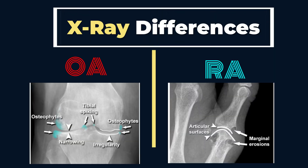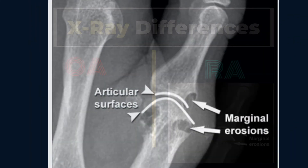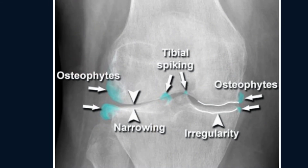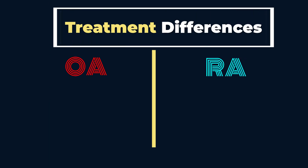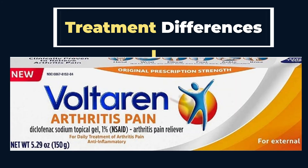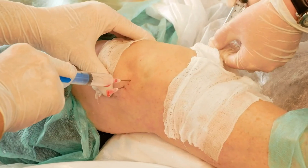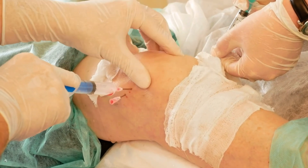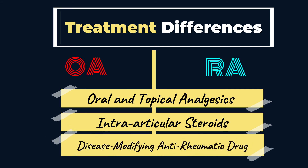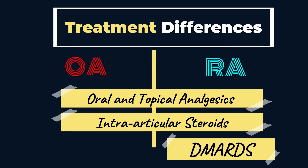Number nine: x-ray differences. The typical findings of RA are bony erosions, whereas in OA, one typically finds bony spurs, or what we call osteophytes. And finally, the treatment differences. Both OA and RA respond well to oral and topical analgesics like NSAIDs, as well as intraarticular steroids. But for RA, additional specific treatment is required known as DMARDs, or disease-modifying anti-rheumatic drugs, which aim to slow the disease progression.